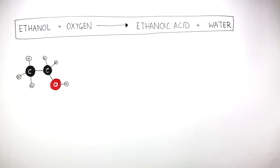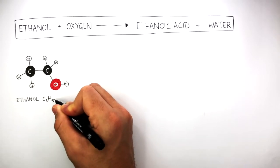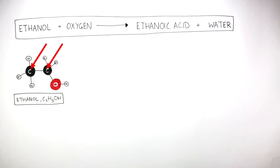This is a ball and stick model of ethanol, C2H5OH, where these are the two carbon atoms, and this is the OH functional group, with the remaining hydrogen atoms covalently bonded to the two carbon atoms.